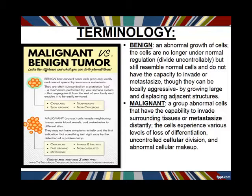Malignant means the cells have become an abnormal structure — they're no longer normal. They now have the capacity to invade tissue next to them, and they also have the capacity to metastasize or go distantly in the body. That's the difference between benign and malignant.